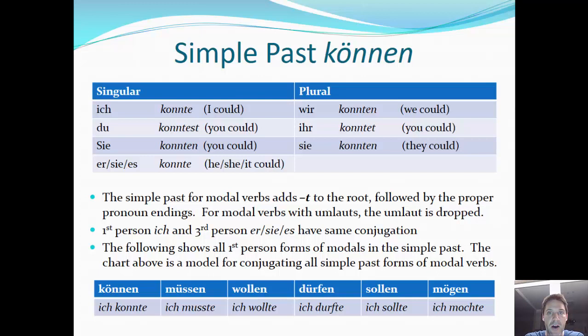Now we have 'können.' Let's start at the very top, breaking down how to conjugate 'können.' Once you figure out one of these, it's similar to the present tense conjugations. Ich konnte, du konntest, sie konnten, er/sie/es konnte, wir konnten, ihr konntet, und sie konnten. Notice the root is 'konn-' — K-O-N-N — and then we add a 't' to the end of that root, followed by the proper pronoun endings. Again, first and third person singular match: 'ich konnte' und 'er/sie/es konnte.'